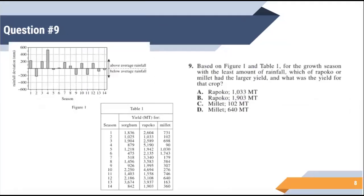Last question. Try number nine. Number nine, we have to look at figure one and table one. So you're gonna have to be putting both of these pieces together. They say for the growth season with the least amount of rain. Which one had the least rain? It's going to be the lowest on the scale. So that would be season two. Season two. Which of Rapoco or Millet had the larger yield and what was that yield? So we're comparing these two numbers here for season two, which one was higher? Looks like Rapoco was higher. 1033 is higher than 102. And the answer should be A. All right. Thanks for watching. Have a great day.